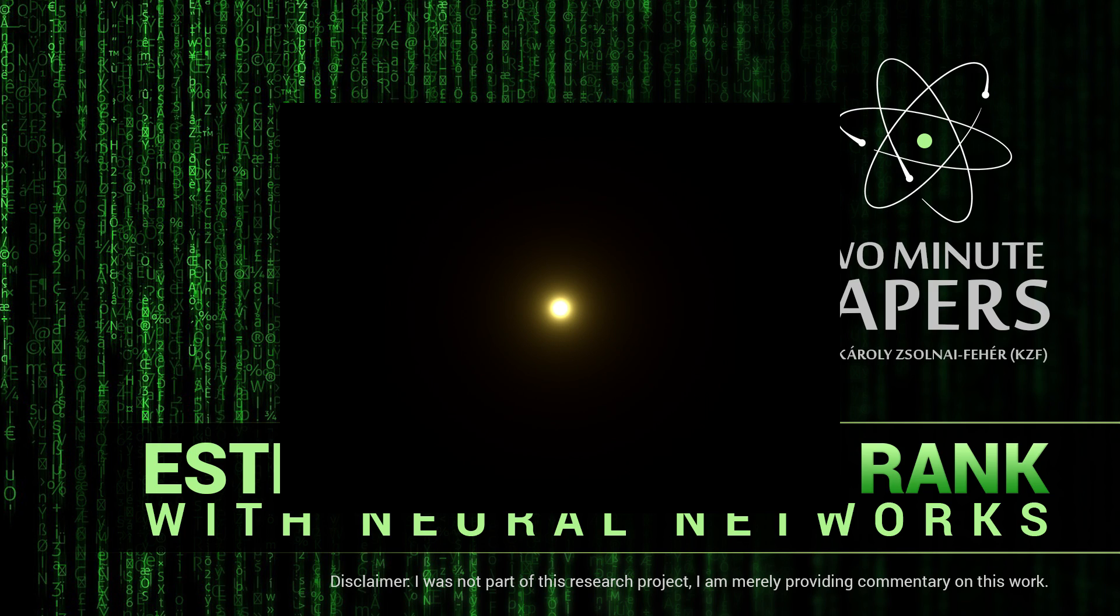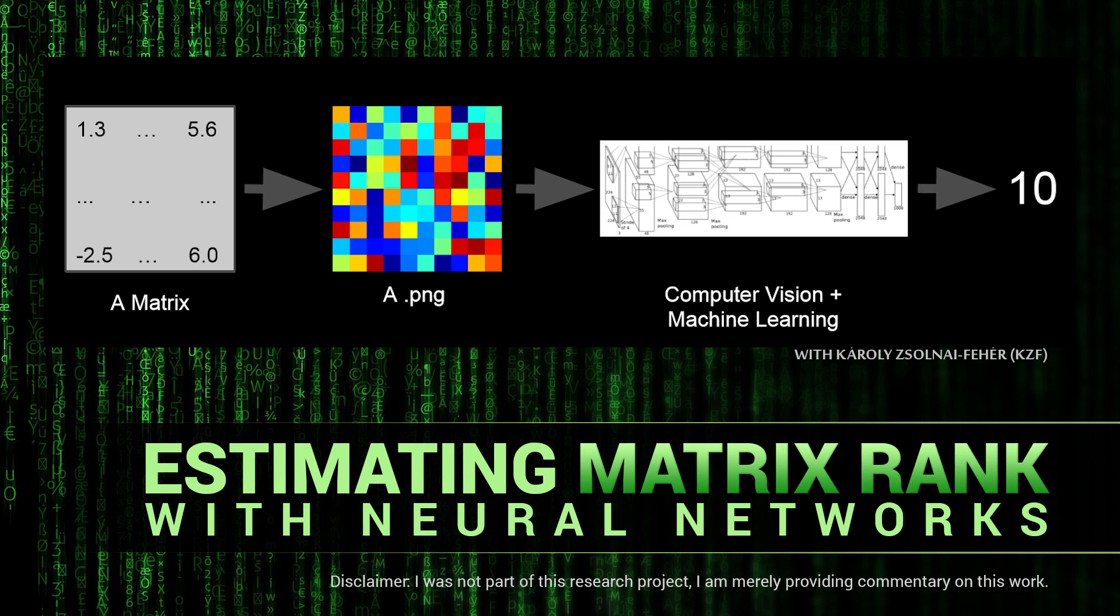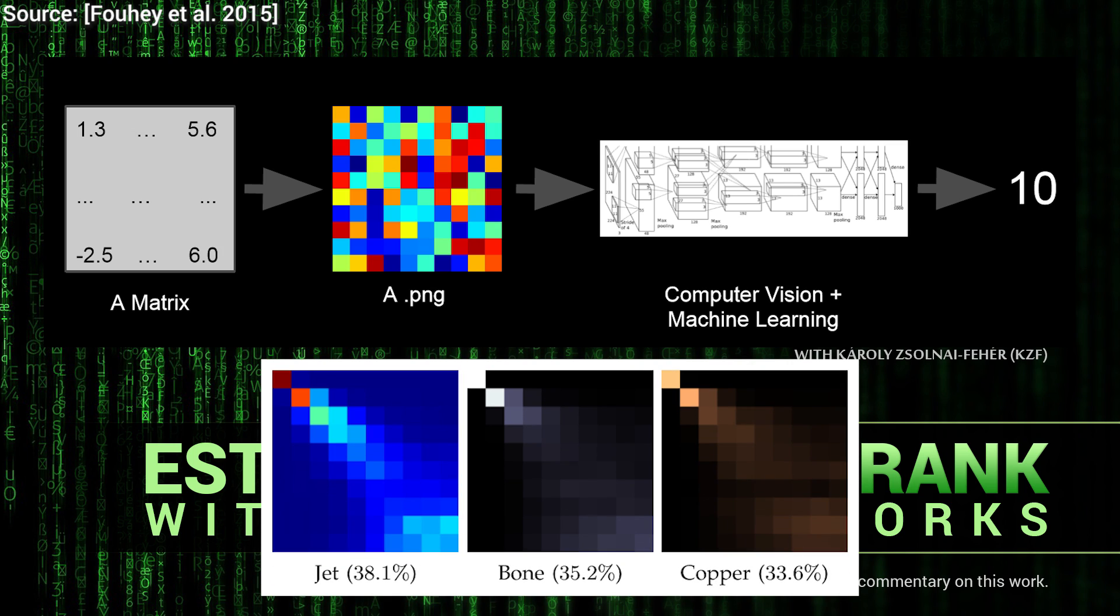However, the main point is that finding out the rank of a large matrix is an expensive operation. It is also important to note that we can also visualize these matrices by mapping the numbers within to different colors. As a fun side note, the paper finds that the uglier the color scheme is, the better suited it is for learning.